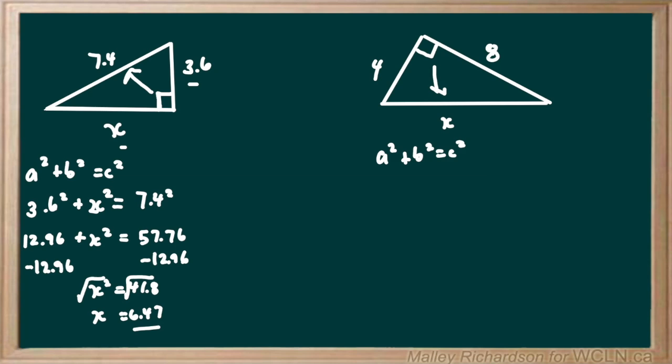It doesn't matter what you label for a or b, so let's say a is 4 and b is 8. We have 4 squared plus 8 squared equals x squared. 4 squared is 16 and 8 squared is 64, which equals x squared. Then 16 plus 64 is 80, so we have 80 equals x squared.